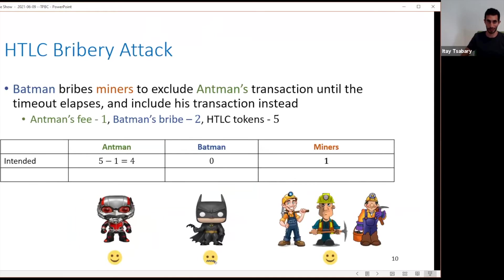When an assumption is not met, there is an attack opportunity. Batman, instead of being passive, decides to bribe the miners to exclude Antman's transaction until the timeout elapses, and then take his transaction instead. For example, say we have an HTLC with five tokens and Antman offered a single token as fee. In the intended scenario, Antman gets four tokens, Batman gets none, and the miners get one. However, if Batman bribes with two tokens, then Antman gets nothing, Batman gets three tokens, and the miners get two — clearly better for both Batman and the miners.